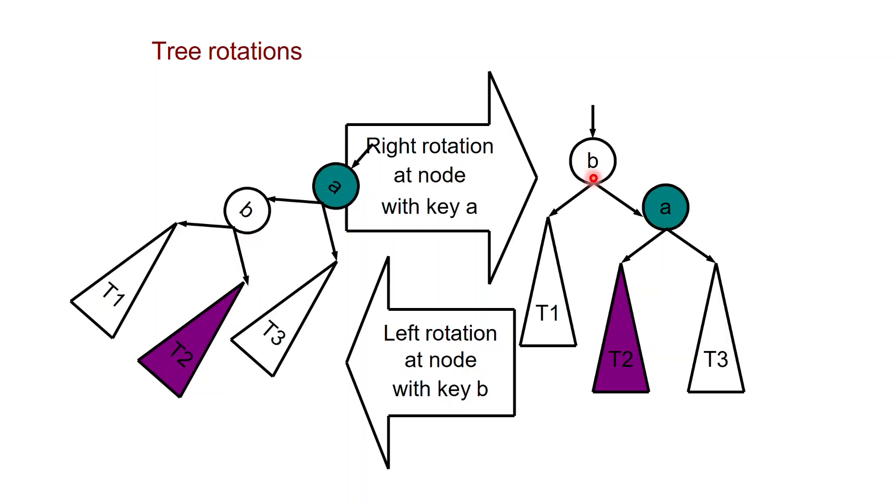So as you can see here after a rotation at A, B became the top node, the right child is A, the left child of B stayed the same and B gave its right child to A which takes it as left child.